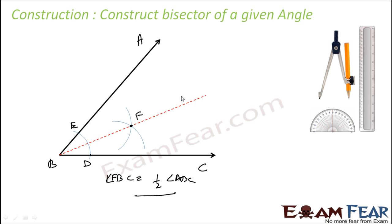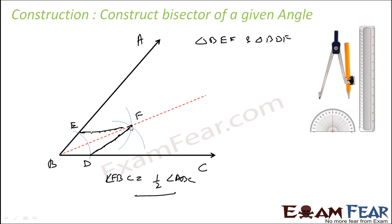If you want, we can explain this. Consider triangle BEF and triangle BDF. EF will be equal to DF because the arcs drawn from E and D were of the same length. So EF equals DF.